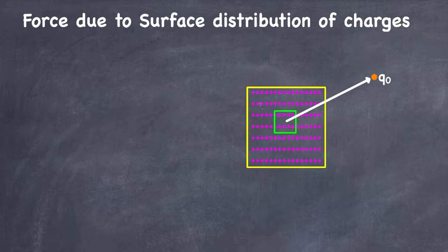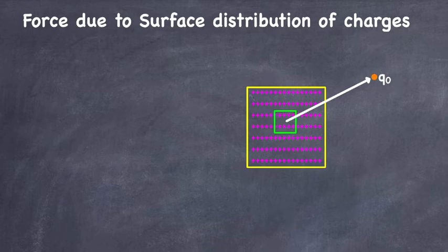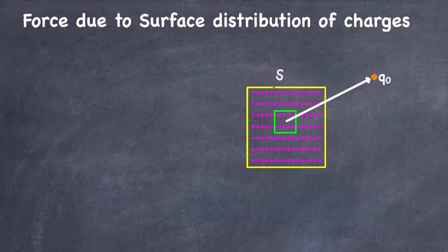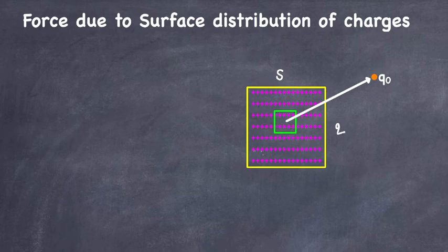We have a surface over here with a charge on it, and we consider a small surface element. We're trying to find the force on charge q₀ due to charge distributed on this surface. Let's say we have a plain sheet — the yellow square — with surface area S, on which charge Q is distributed uniformly.